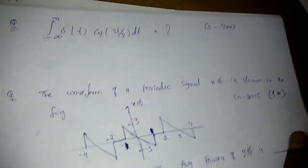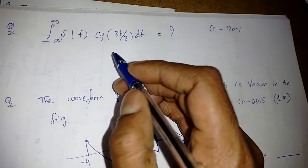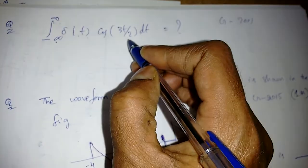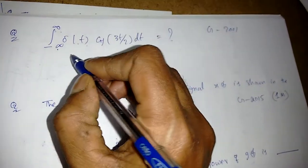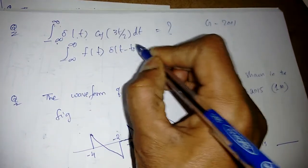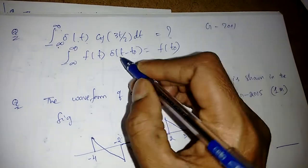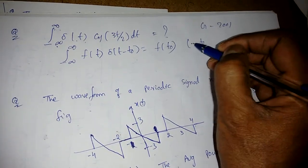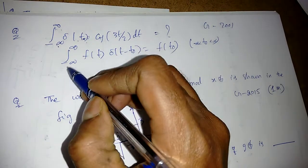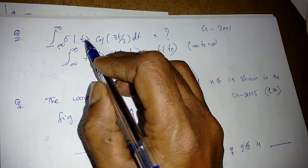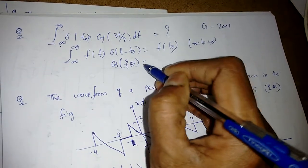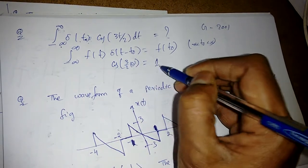In this video we are going to solve a few more problems on GATE. The first problem is: integral from minus infinity to infinity of delta(t) times cos(3t/2) dt. Using the sifting property, if f(t) times delta(t minus t_naught) is integrated, the answer is f(t_naught), provided t_naught is between minus infinity and infinity. Here there is no t_naught shift, so t_naught equals 0. The answer is cos(3/2 times 0), and cos(0) equals 1.